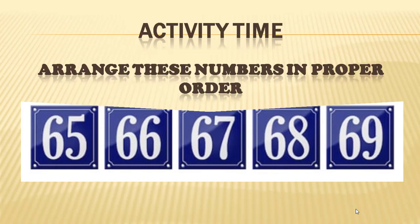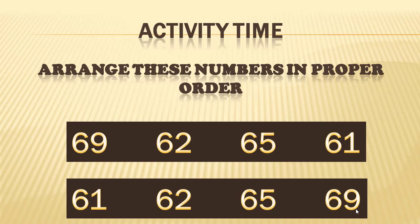Students, here is an activity for you. Here are a few numbers which we have learnt today. These numbers are not in arranged form — they are 69, 62, 65, and 61. Now tell me which number will come first. First of all we shall write 61, then 62, then 65, and then 69. Did you like this activity?